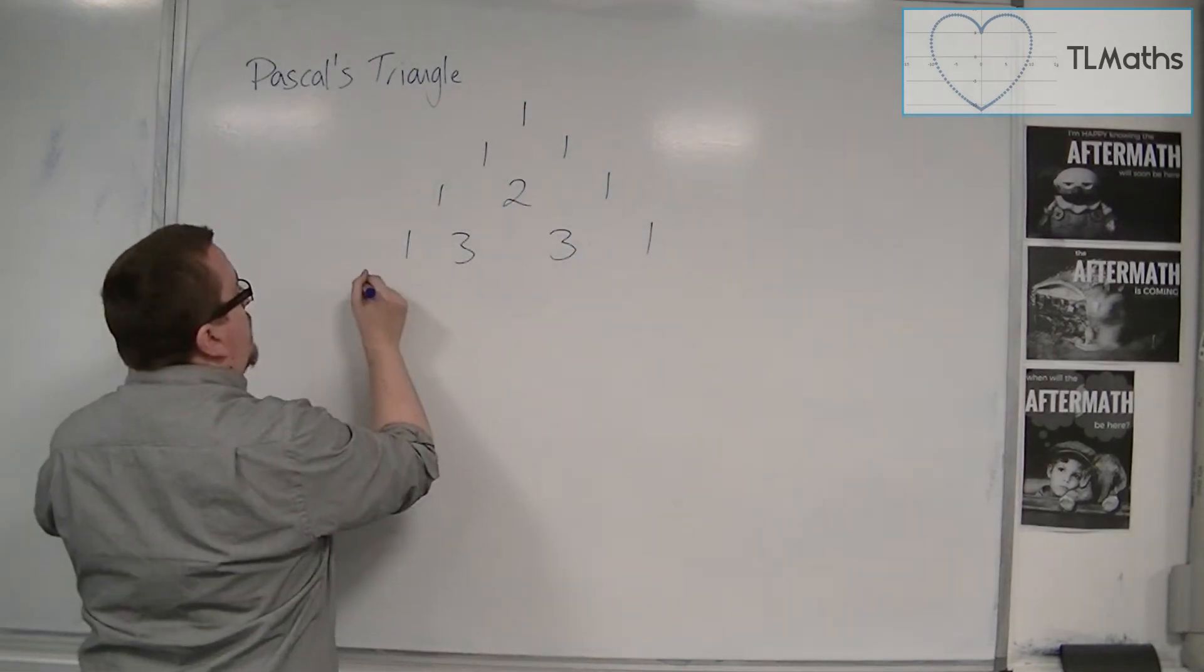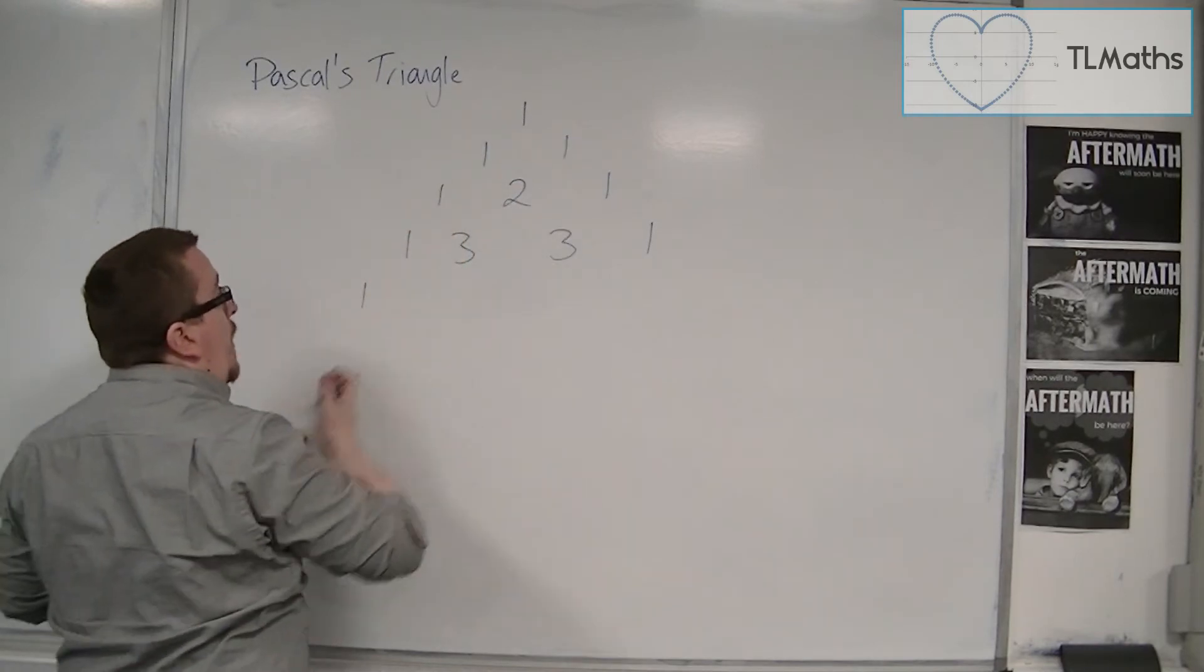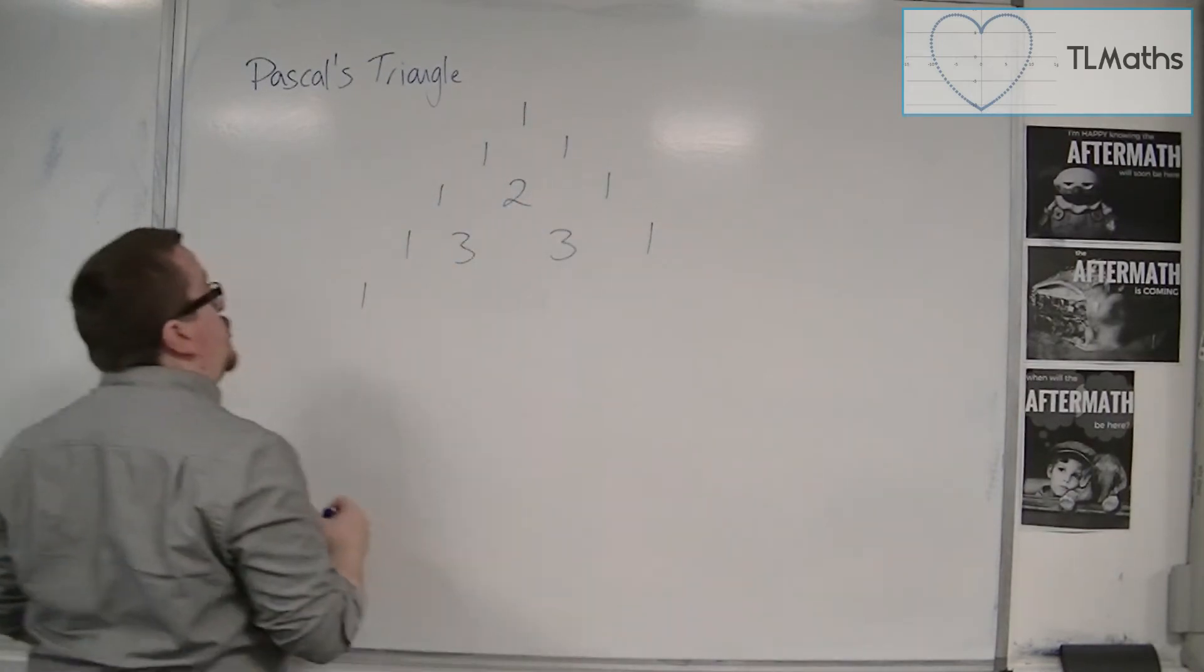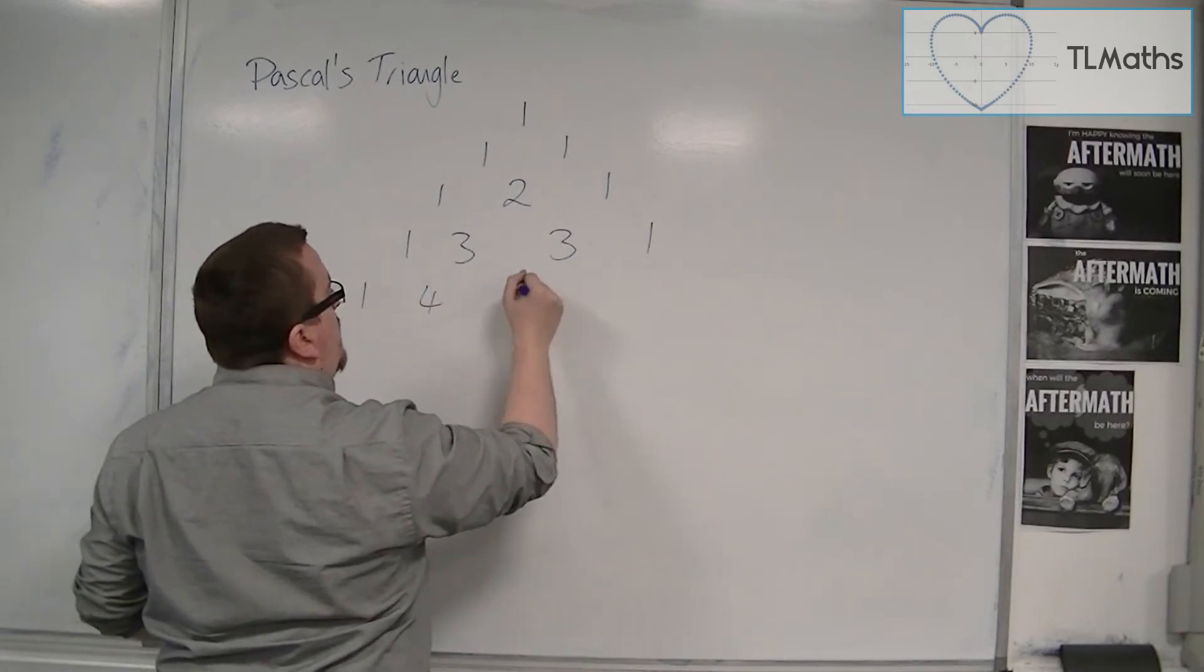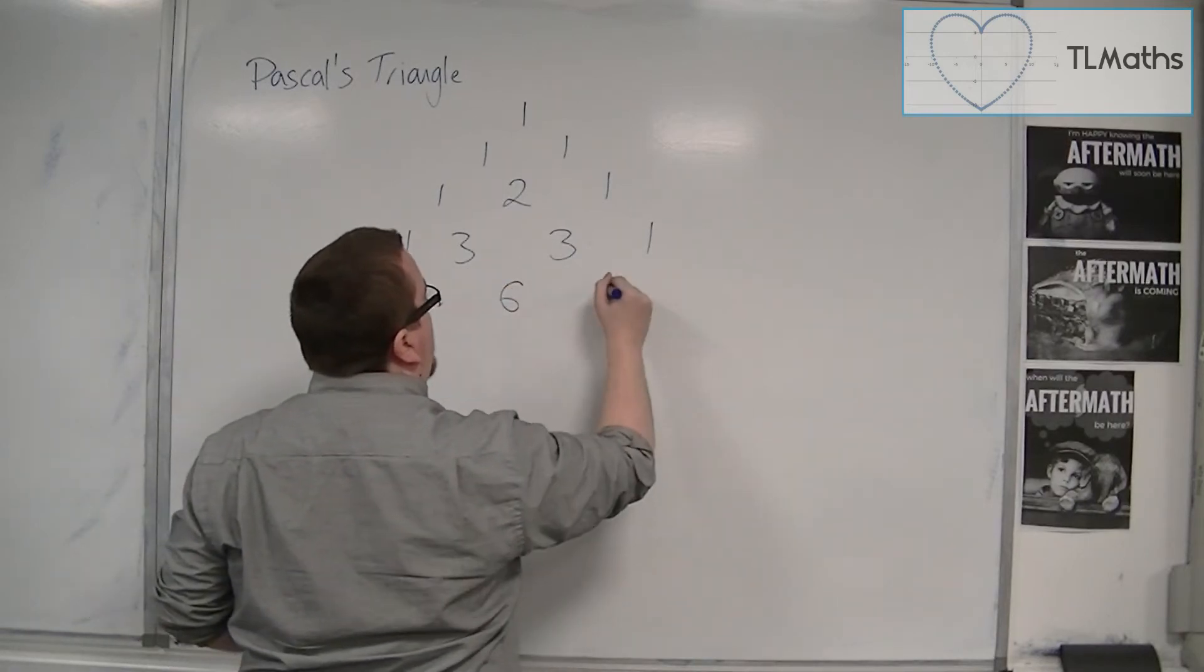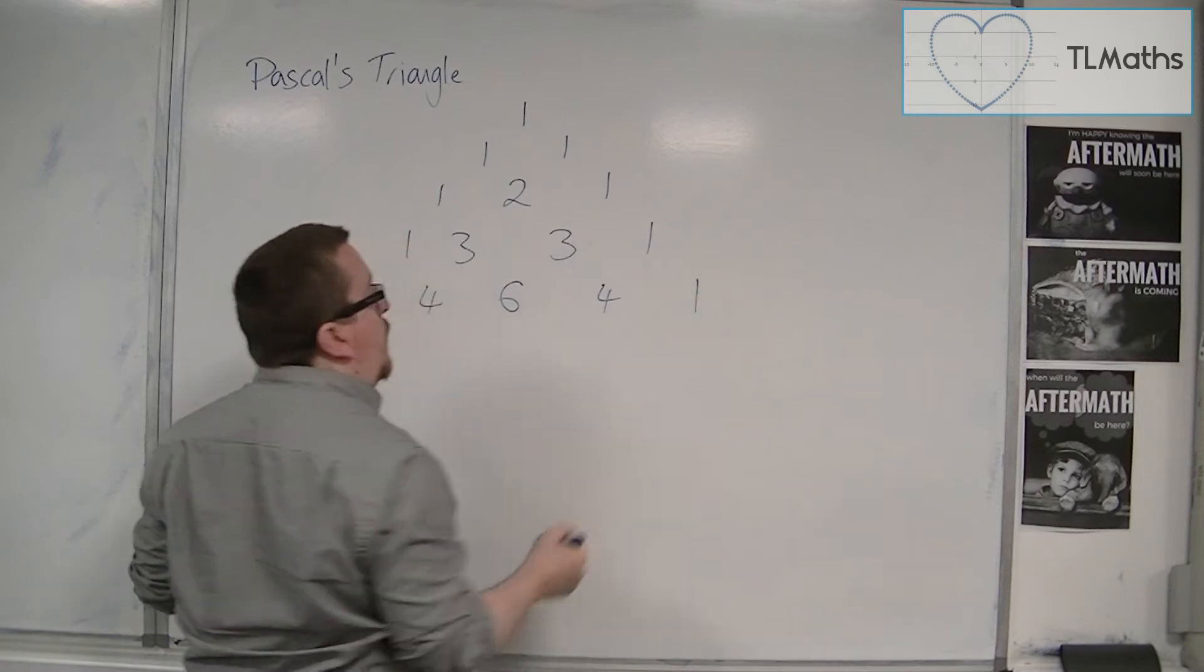So the next row would start with a 1 because the 1s go in both directions. Then we have 1 and 3 make 4, 3 and 3 make 6, 3 and 1 make 4, and then we've finally got a 1.